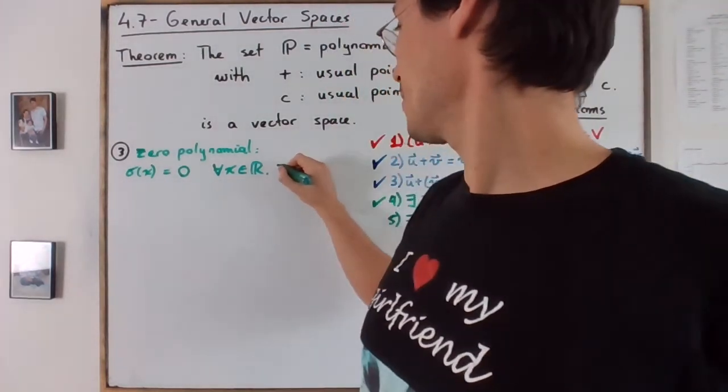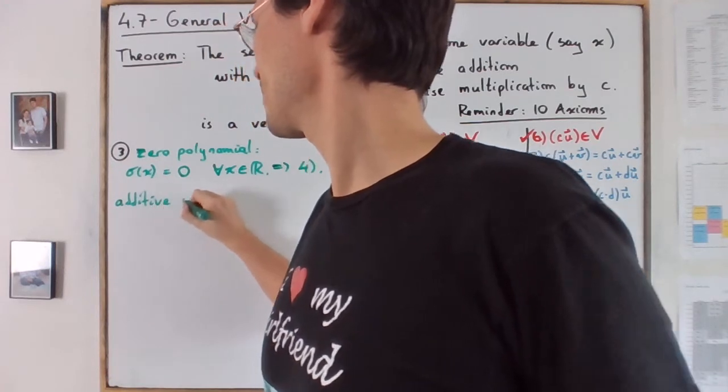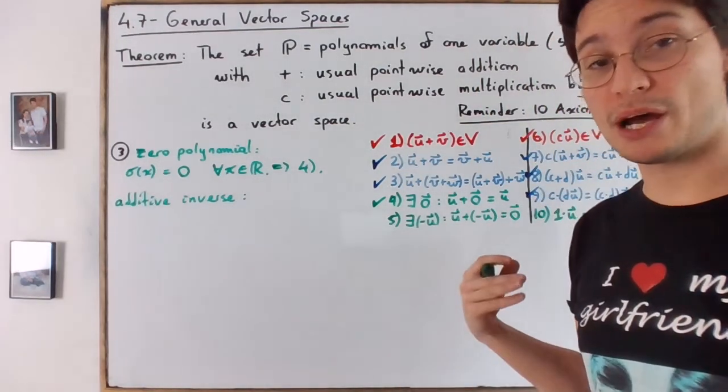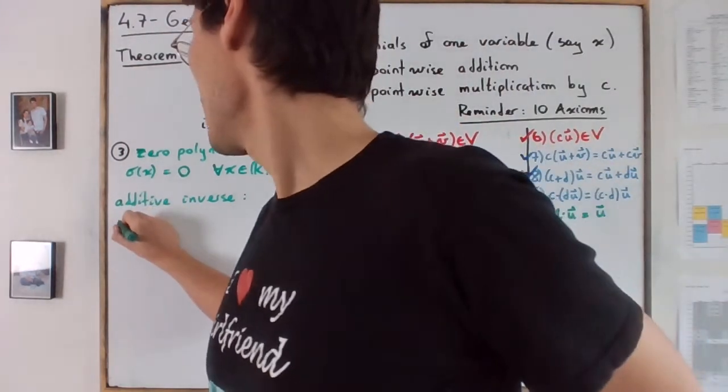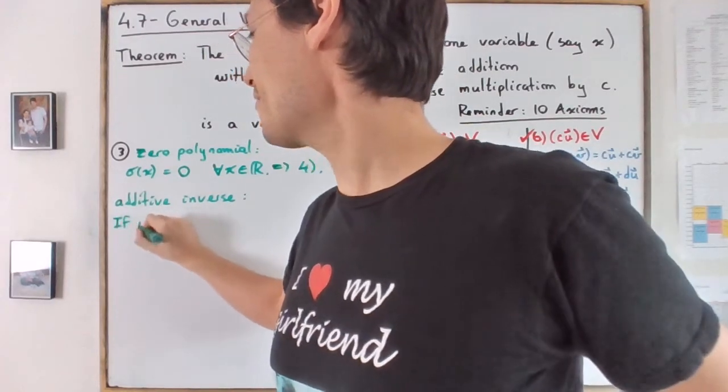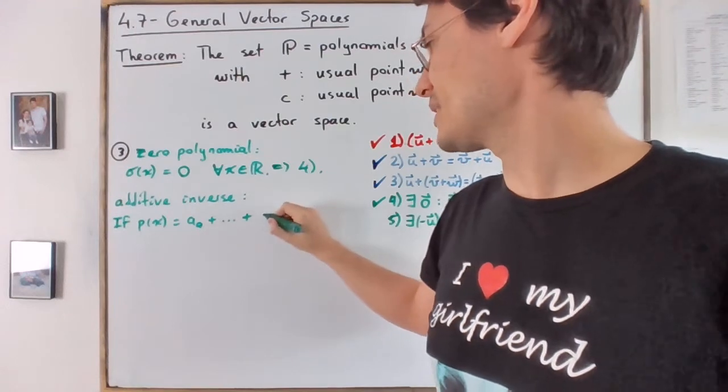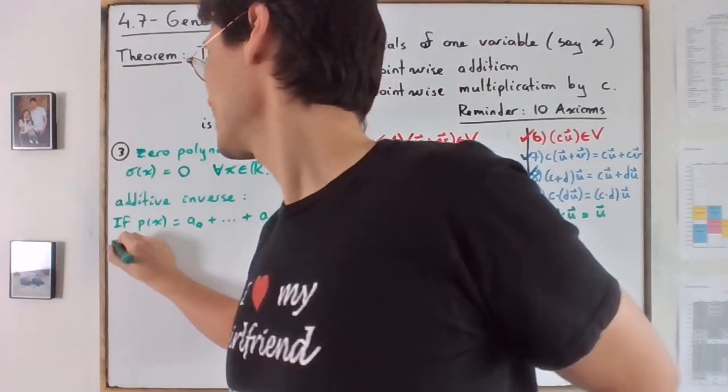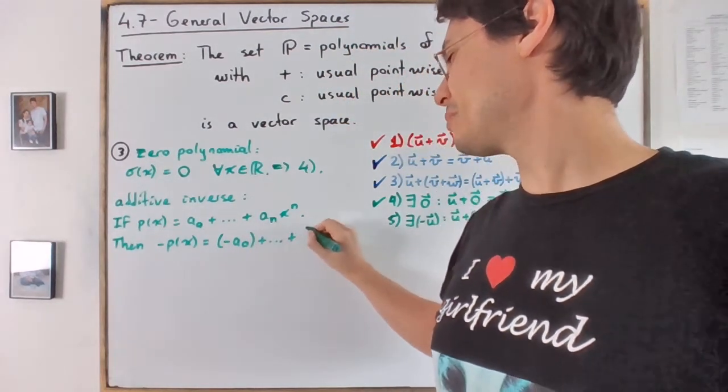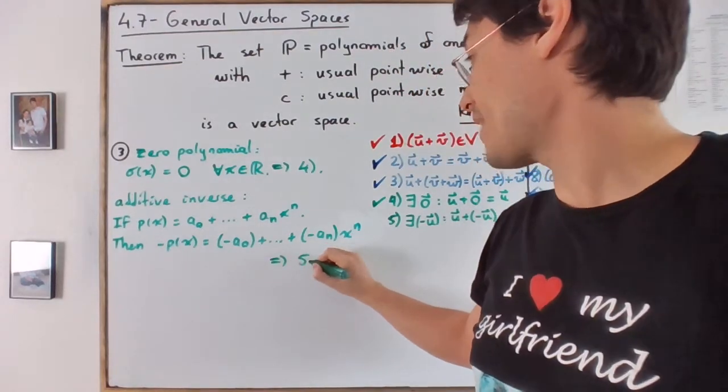Now the additive inverse. So we have four inverse. The additive inverse. This is simply the polynomial that you get by flipping all of the signs, right? You change the sign of all the coefficients. So negative P of x. So actually, let's rewrite what P of x is. So if P of x is equal to a zero plus all the way up plus a n x to the power of n, then negative P of x is literally negative a zero plus all the way up plus negative a n x to the power of n. So which means that and we can easily verify that this satisfies number five.